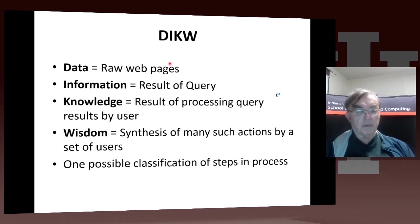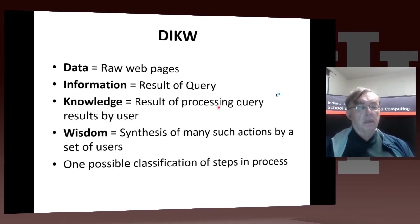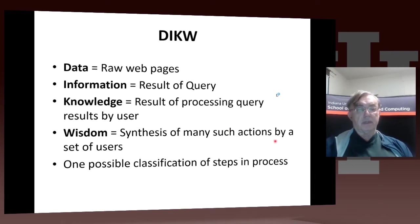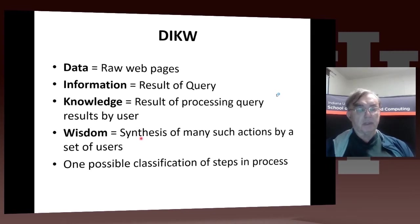You could map the data-information-knowledge-wisdom hierarchy to web search. All web pages can be thought of as data. The results of a query could be thought of as information. Knowledge could be the result of processing the query results by the user. And wisdom comes from synthesizing many such actions by one or more users. Normally, data is nearer to information.